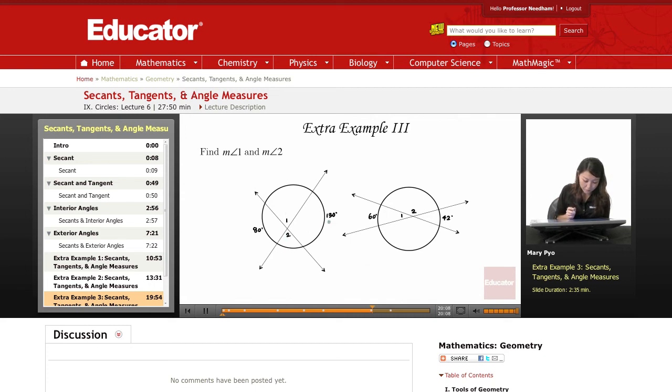This is 80, this is 130. So I can just use those to find this angle right there. So 130 plus 80 divided by 2 is going to be 210 divided by 2, and then that's going to be 105.